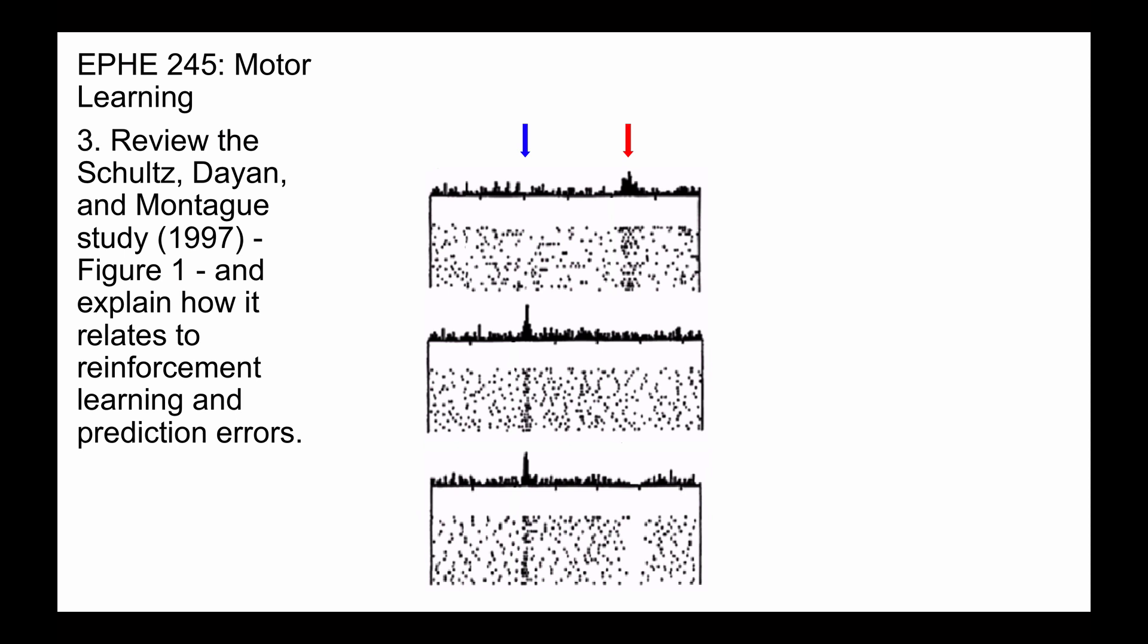Finally, on the bottom panel, you see the prediction error to the cue, because again, the cue is unexpected, and you see a negative prediction error at the time of reward, because there's no reward given, but there is an expectation. So zero minus the expectation is a negative prediction error, and this is exactly what reinforcement learning theory would predict.